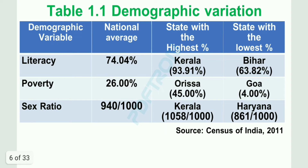Now we shall understand Table 1.1, which has four columns: demographic variable, national average, state with the highest percentage, and state with the lowest percentage. For literacy, the national average is 74.04%; Kerala is highest at 93.91% and Bihar is lowest at 63.82%. For poverty, the national average is 26%; Orissa is highest at 45% and Goa is lowest at 4%. For sex ratio, the national average is 940 females per 1000 males; Kerala is highest at 1058 and Haryana is lowest at 861. Source: Census of India 2011.